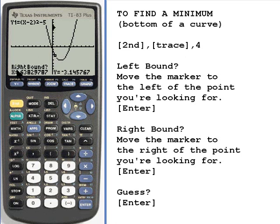And now it's asking me about the right bound. So I want to go to the right of the point that we're looking for. That's good. Press enter again. There are the two arrows showing me where it's going to look. It's going to look somewhere in between those two arrows, so right down here. It's asking me about guess. I just press enter again.